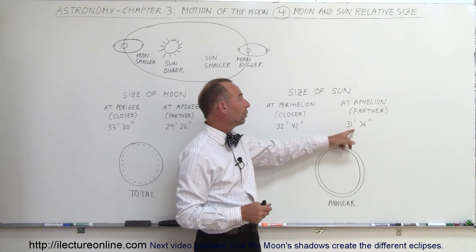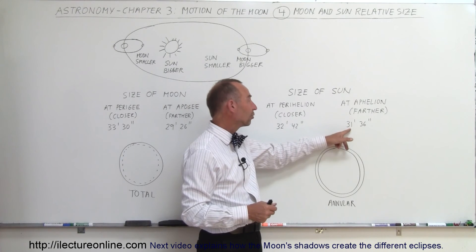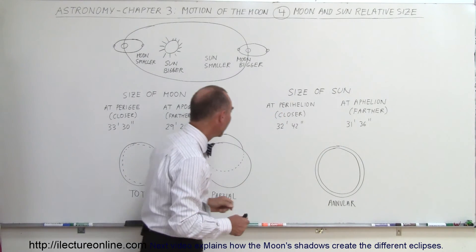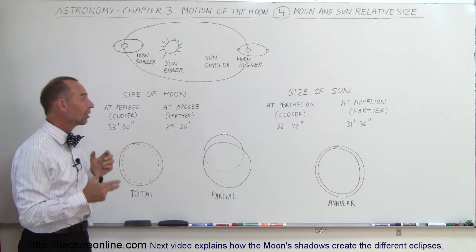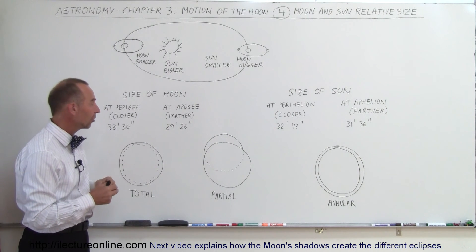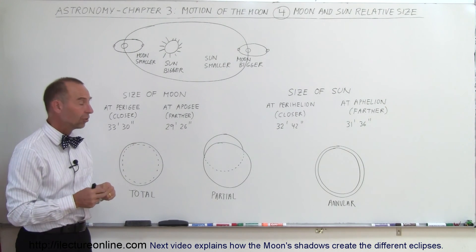but at its smaller size, when we're the farthest away from the Sun, it's 31 minutes and 36 seconds, you can see then that it's not small enough for the Moon to cover it, so that's why sometimes we have annular eclipses and sometimes we have total eclipses.